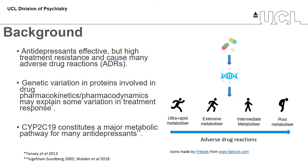Differences in treatment response may be explained in part by genetic variation in enzymes, receptors and other proteins involved in the pharmacokinetic or pharmacodynamic processes. Cytochrome P450 or CYP enzymes are responsible for the metabolism of around 75% of all marketed drugs, including many antidepressants. The genes that encode CYP450 enzymes are highly polymorphic and variation in these genes results in differences in the catalytic activity of the enzymes, which ultimately can cause different people to metabolise their medication at different rates.